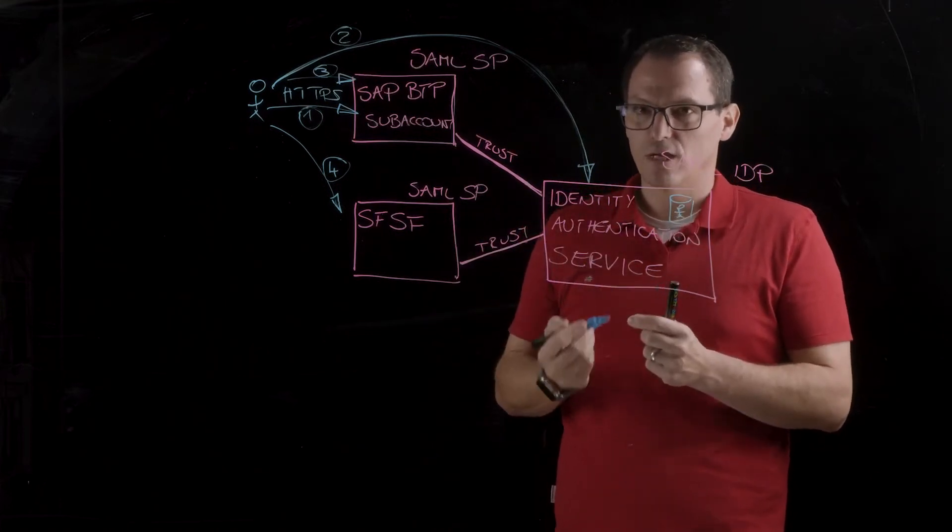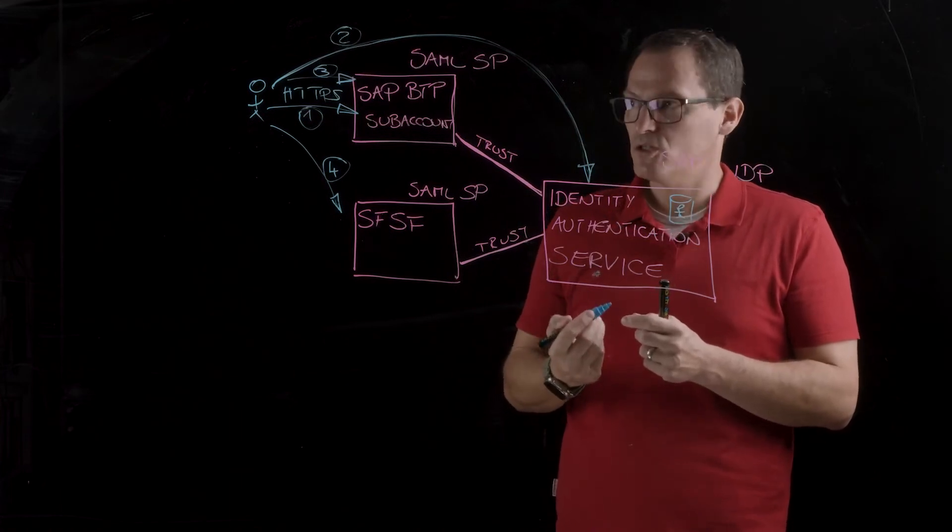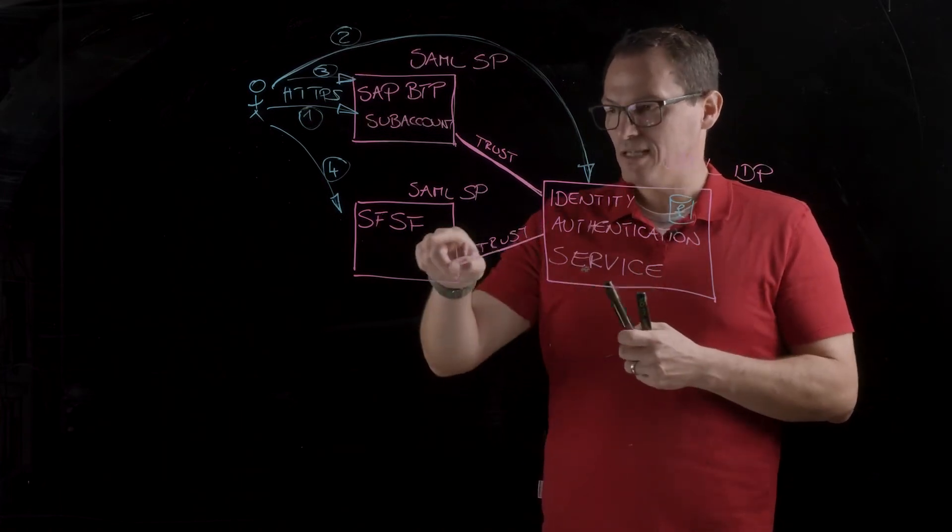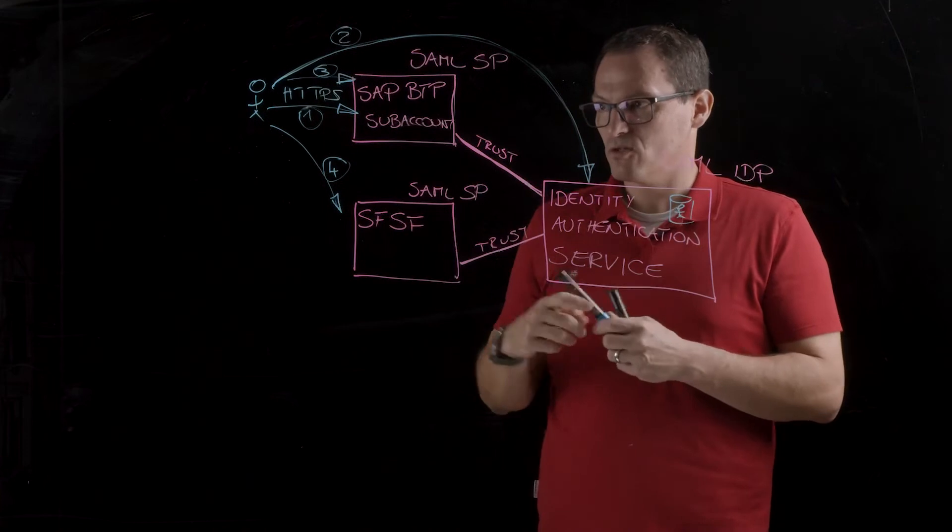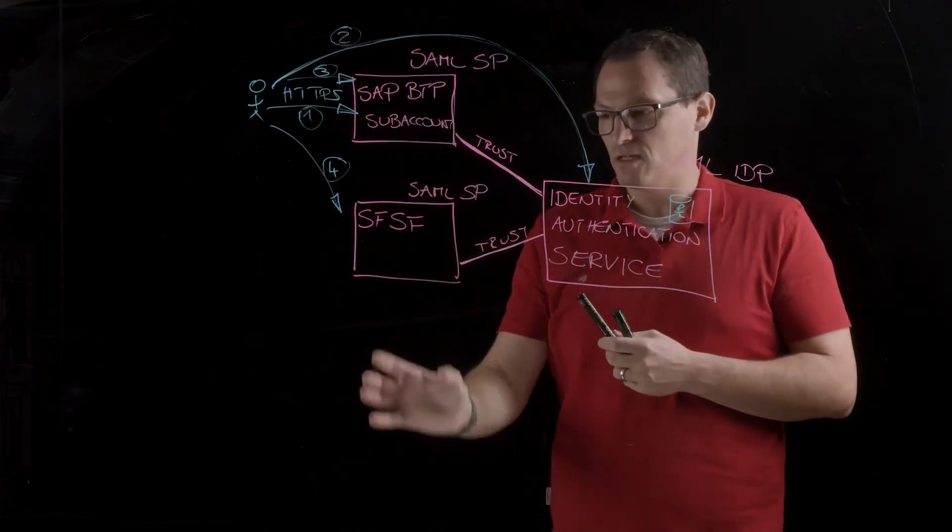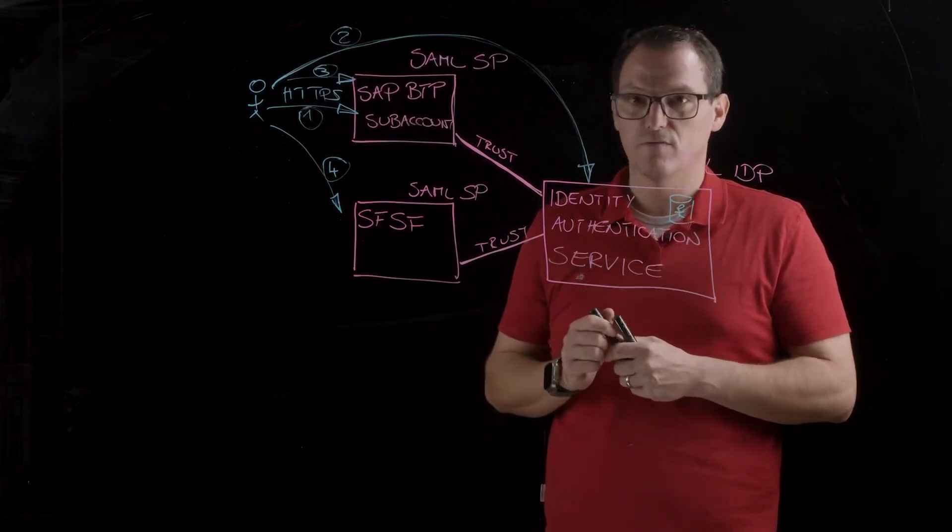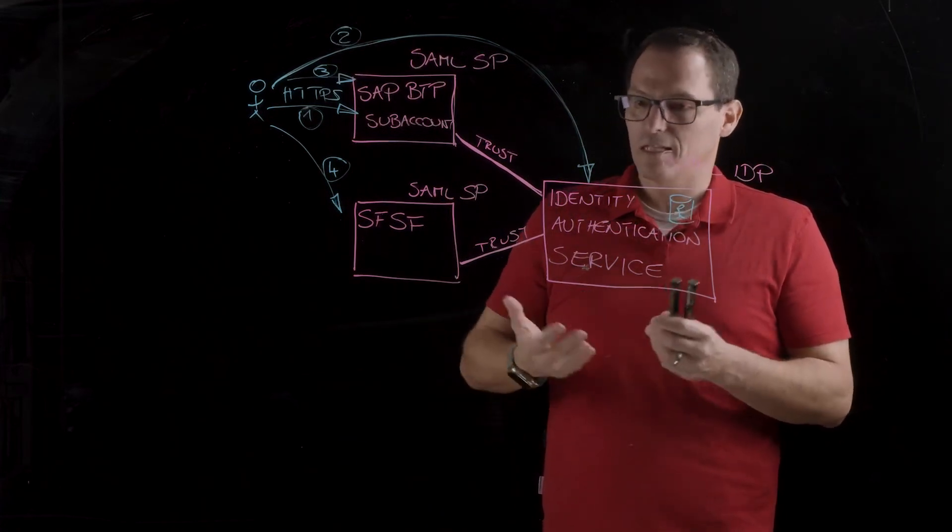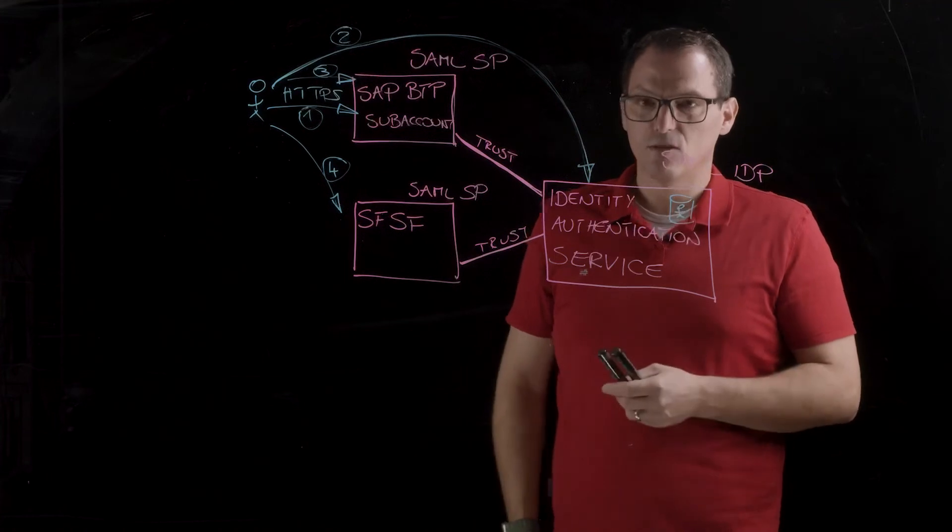The authorization, which means the check if you have the correct permissions in the system. This is still done here inside the systems. So, the authorization check is done either in the sub-account here or in the SuccessFactors or in the S400 cloud or whatever system you have. And that's basically the idea of the identity authentication service.